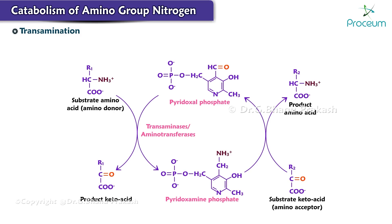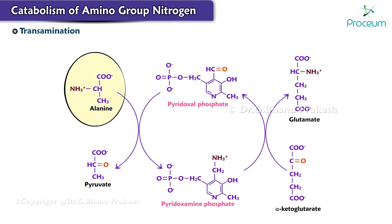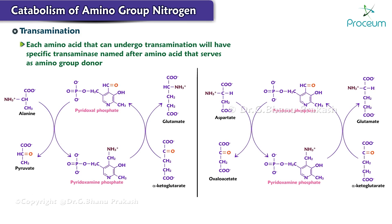The transamination reactions are catalyzed by transaminases or aminotransferases, are readily reversible, and need pyridoxal phosphate (PLP) as a coenzyme. In a transamination reaction, generally an amino group from an amino acid is transferred to alpha ketoglutarate, forming glutamate, while the amino acid substrate is converted to a corresponding keto acid. Each amino acid that can undergo transamination will have a specific transaminase named after the amino acid that serves as the amino group donor.